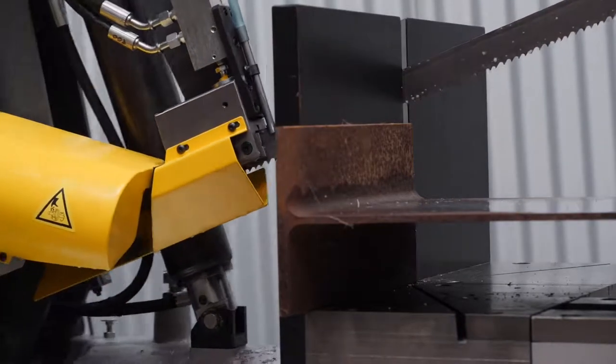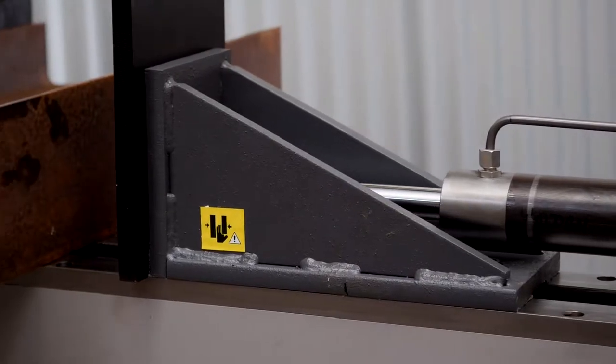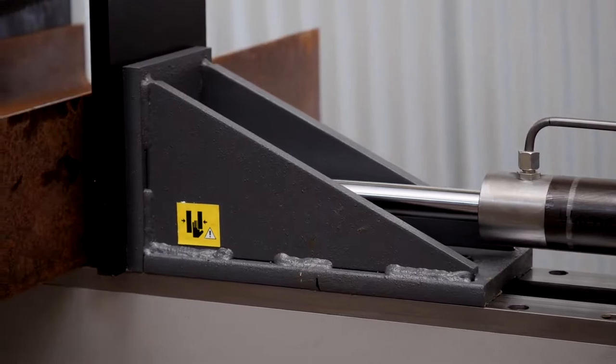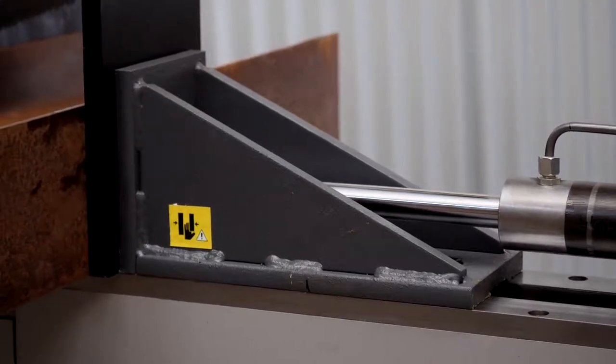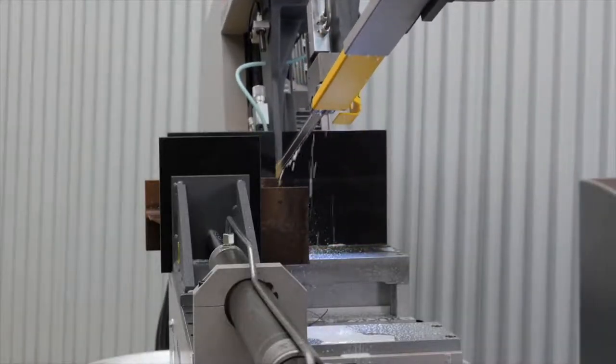This is a semi-automatic bandsaw with hydraulic bias clamping. Once you press the start button, the machine will automatically clamp the workpiece, cut the material. Once the cut is complete, the bow will return up to the top of the workpiece ready for the next cycle.